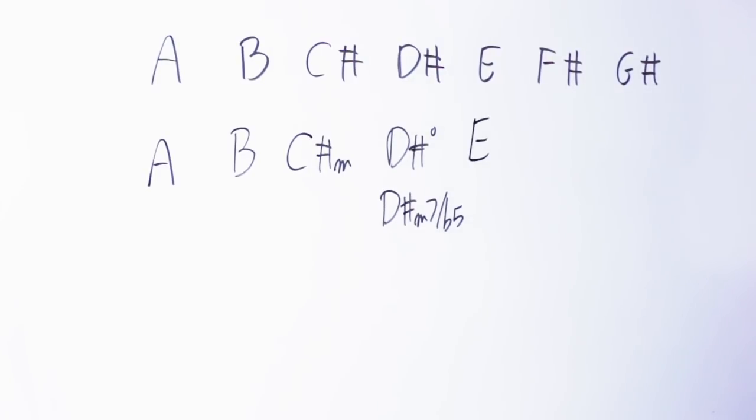On the fifth note I have an E major triad: E, G sharp, B. On the sixth I have an F sharp minor triad: F sharp, A, C sharp. And on the last one I have a G sharp minor triad: G sharp, B, D sharp.